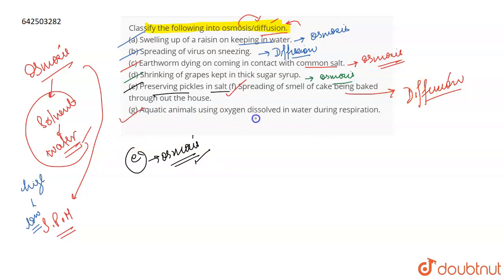Talking about the G part which is aquatic animals using oxygen dissolved in water during respiration. This is an example of diffusion of oxygen. Diffusion of oxygen takes place which is dissolved in water and that is why aquatic animals use that oxygen. So that's all for the question.